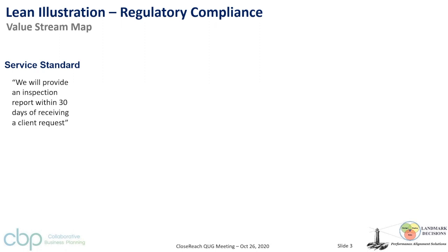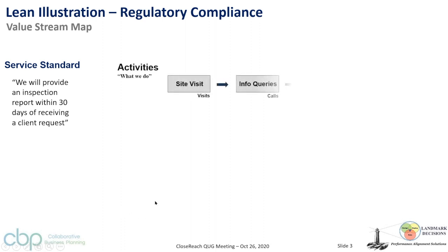One tool in the lean toolkit is value stream mapping. This example is based on work we did at Health Canada, working on efficiency indicators. They had a service standard around providing an inspection report when a client needed a product or facility certified. Key activities: a site visit, handling queries back and forth with the client, and ultimately producing a report — a very simple flow diagram.